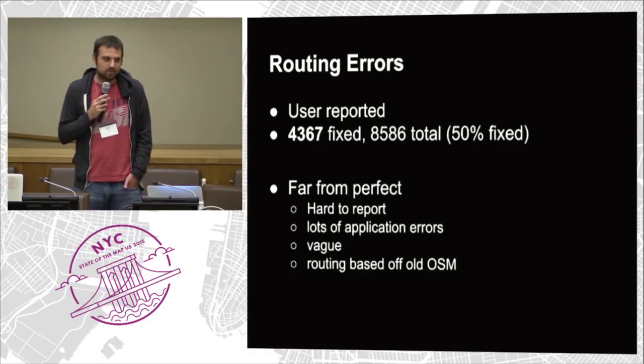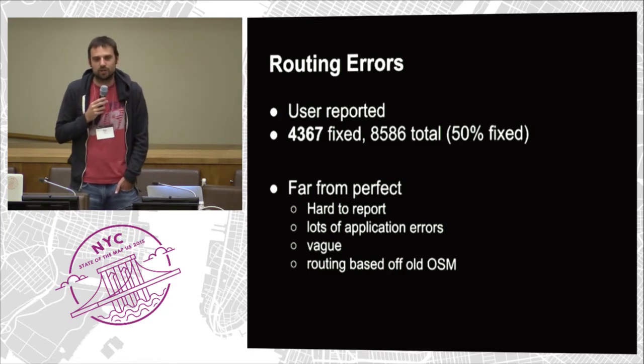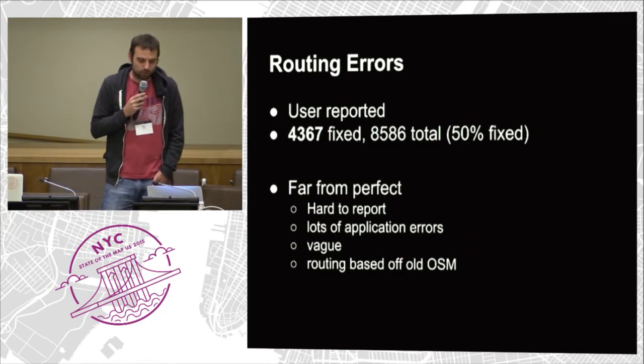It's far from a perfect tool. You get a lot of reports where it's just hard to figure out what people are talking about — sometimes people write two paragraphs of weird stuff. One other issue is our routing base map layer isn't necessarily up to date, so errors could have already been fixed in OSM. There are areas reported three or four times in our tool, which is unfortunate.